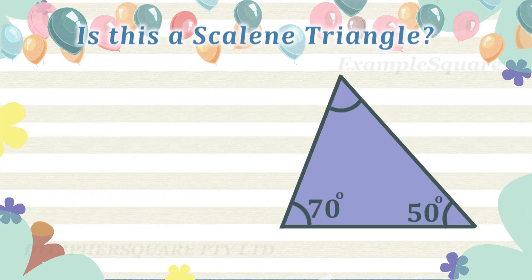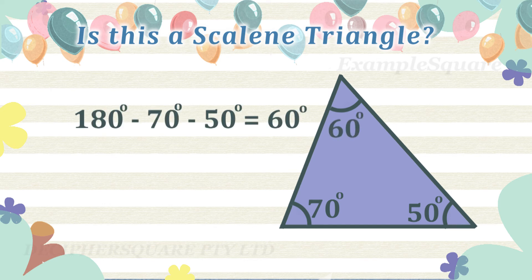Is this a scalene triangle? Yes, this is a scalene triangle. The two interior angles shown in this example are 50 degrees and 70 degrees. Since the sum of all three interior angles of a triangle is always 180 degrees, the third angle is equal to 60 degrees. So all three interior angles of this triangle are different, and thus this is a scalene triangle.